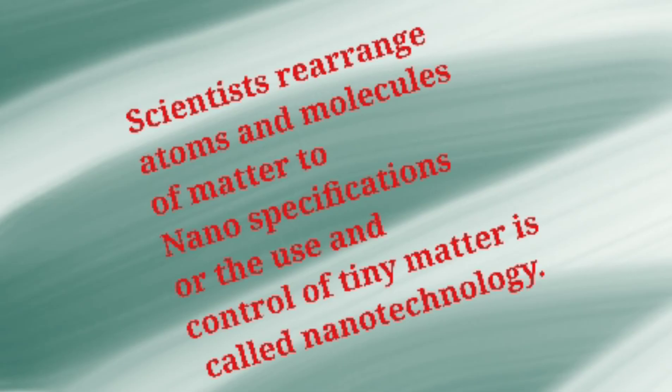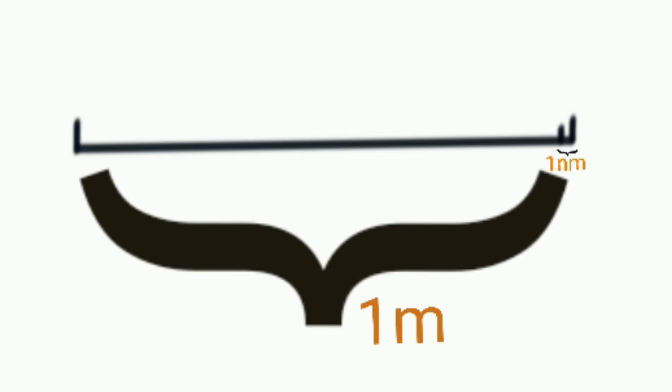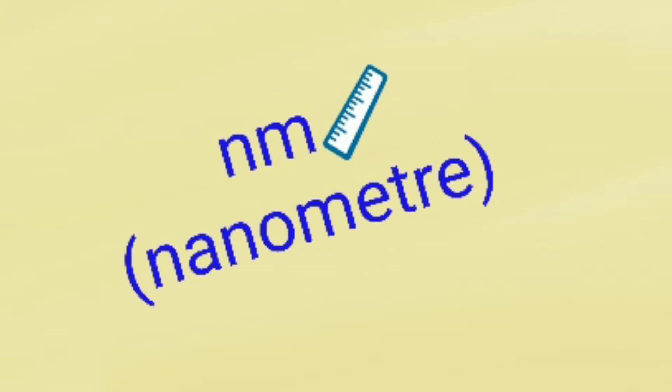First off, let's begin with defining nanotechnology, in which scientists rearrange atoms and molecules of matter to nano-specifications — or the use and control of tiny matter is called nanotechnology. One nanometer is a billionth of a meter. Nano means dwarf in Greek. These particles are measured in nanometers.